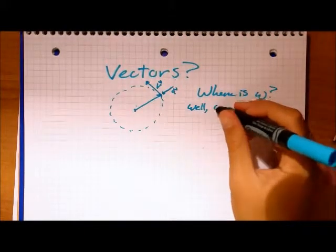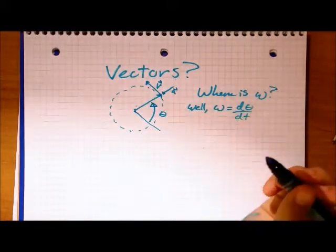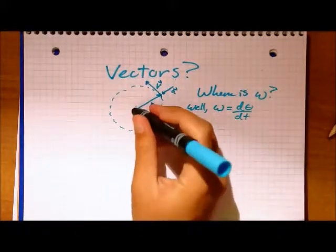Well, we know that our angular velocity is equal to the derivative of theta with respect to t. Using the right-hand rule, we know that therefore our angular velocity vector is pointing straight up.